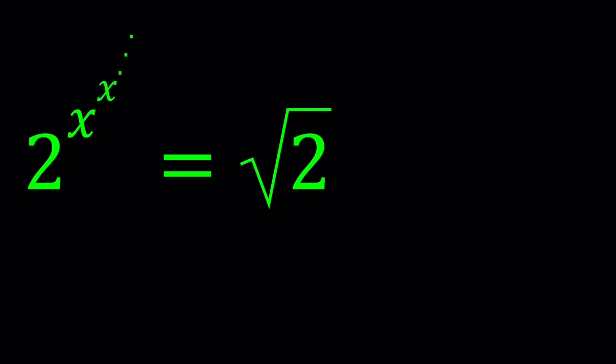Hello everyone, in this video we're going to be solving an exponential equation, a fun one. We have this exponential power tower: 2 to the power x to the power x to the power x dot dot dot, so on and so forth. All these are x's after the 2, and that is equal to square root of 2. We're going to find the value of x from here.